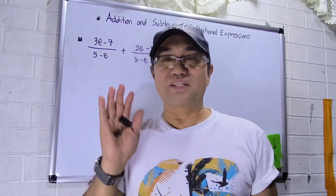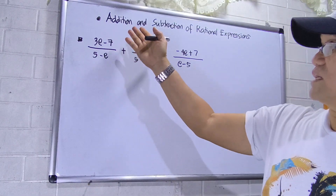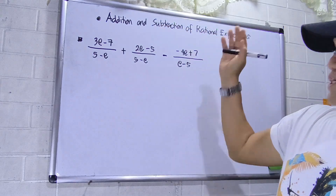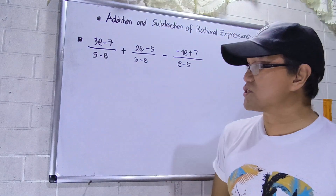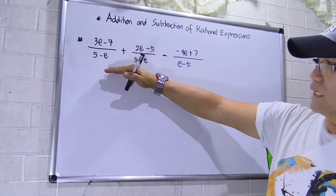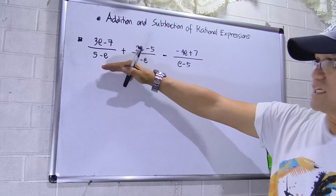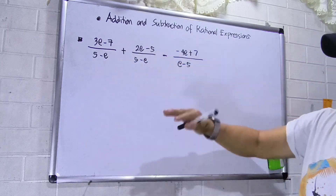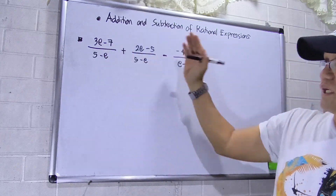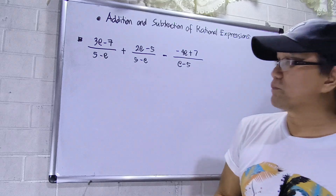Hi, good day to everyone. My topic is about addition and subtraction of rational expressions. I have here a variable 'e' — this is not exponential, this is only a variable. This topic is in algebra.